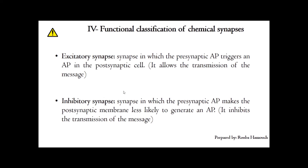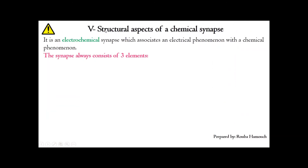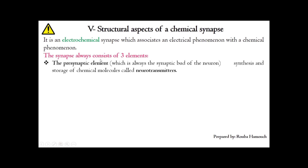Concerning the structural aspects of a chemical synapse: the chemical synapse is also called an electrochemical synapse because it associates an electrical phenomenon — the arrival of an action potential — with a chemical phenomenon — the release of chemical molecules — to allow the transmission of the message from the pre-synaptic neuron to the post-synaptic cell. The synapse always consists of three elements, the first being the pre-synaptic element, which is always the synaptic bud of the neuron.